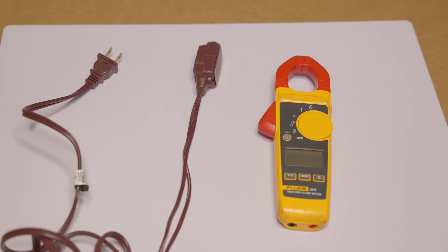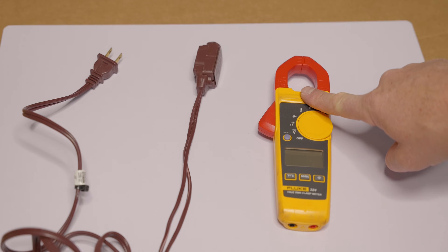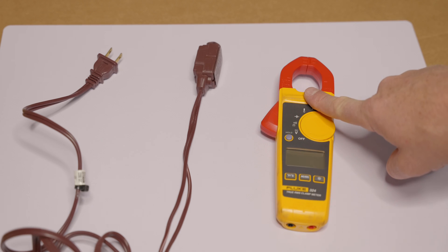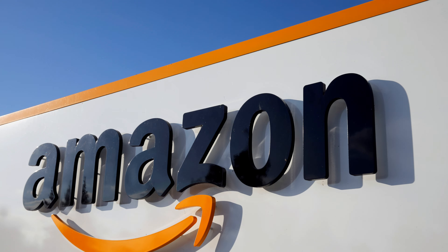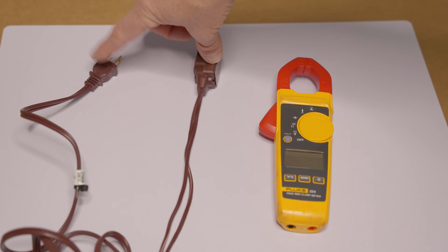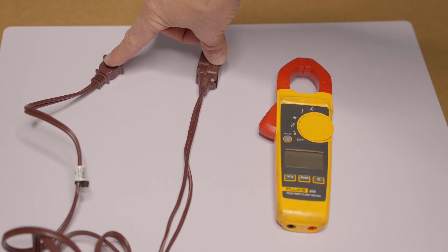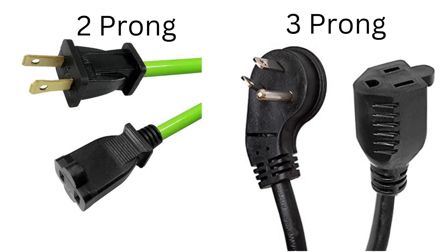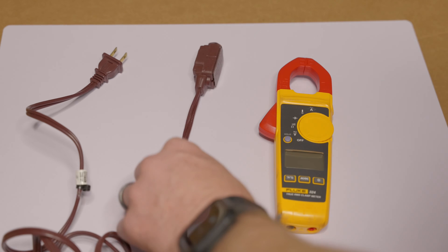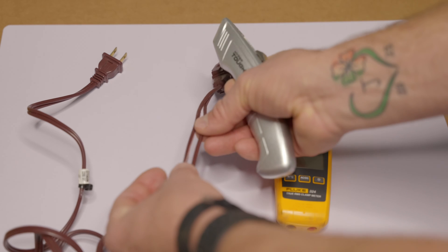To build our device amperage current tester, you're just going to need a clamp-on ammeter. This is a Fluke. You can get very cheap models from places like Harbor Freight, Lowe's, Home Depot, even on Amazon. You'll also just need some sort of an extension cord. It could be outdoor or indoor, three-prong or two-prong. For my example, I'm going to use a two-prong indoor. You can see I've already cut mine.